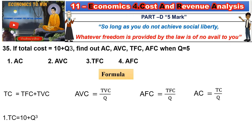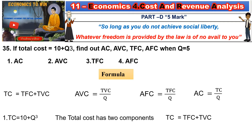From the question, total cost TC is equal to 10 plus q³. You have to substitute the unit of output. Total output is 5. So when substituting q value as 5: TC is equal to 10 plus q³, which gives TC equal to 10 plus 5 cubed. 5 cubed is 125. Therefore, TC is equal to 10 plus 125, which equals 135.